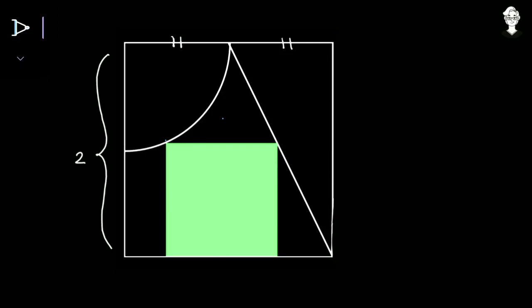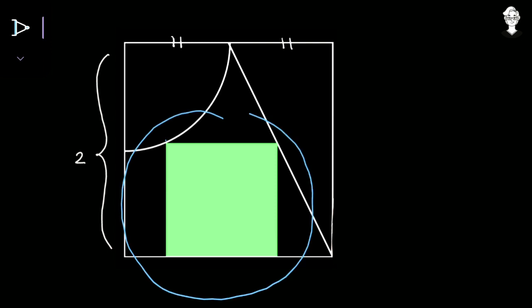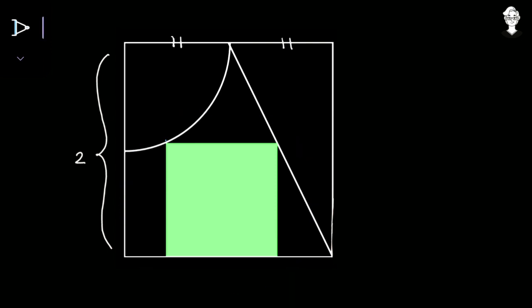Today we have a very easy geometrical question with simple given data. The diagram is on the screen. All you have to do is find the area of the green square which has been inscribed. This problem is very easy and has a very nice way to be solved using trigonometry. Let us see the solution.